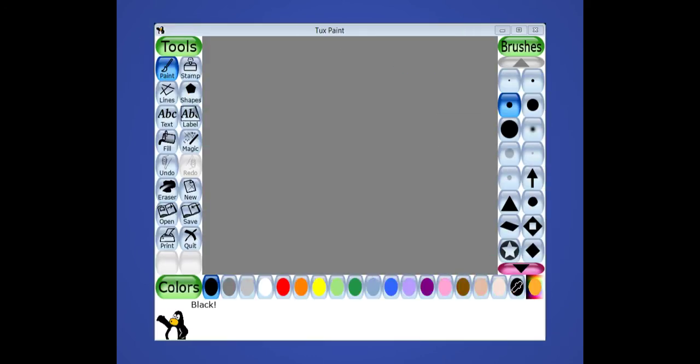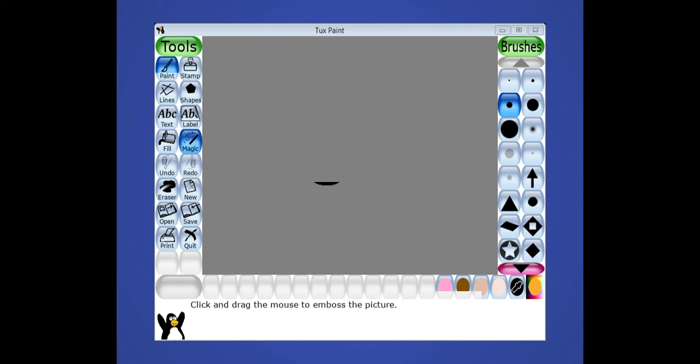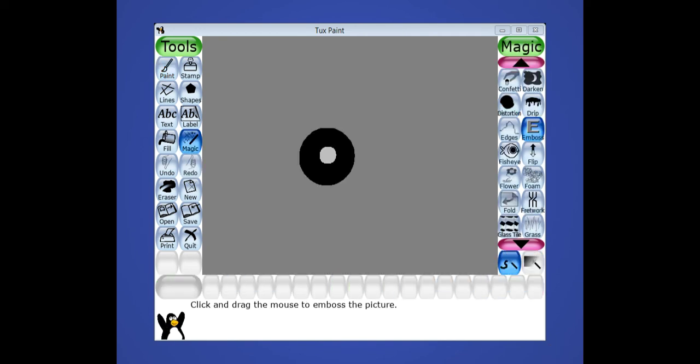First of all children, we will fill a gray color as a background. And now we will draw two circles and we will fill two different colors. Now we will just click on the magic tool and from the right side we will click on emboss tool. And we will drag our mouse pointer that changes into the magic wand in the drawing area.